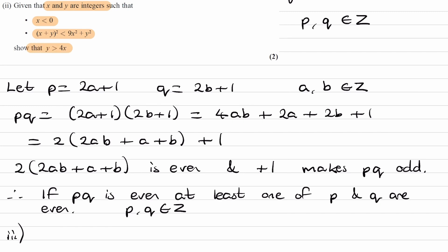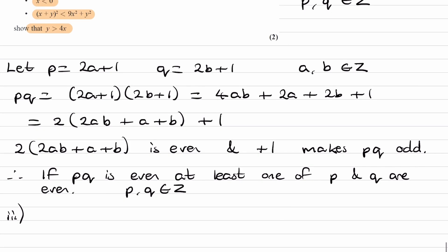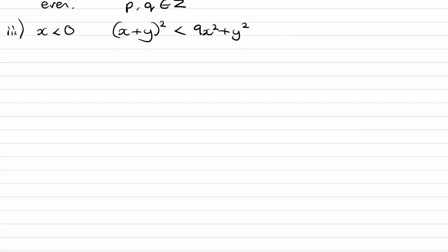Okay, so let's just write that down. So X, we're told, is less than 0, so it's negative in other words. And then X plus Y squared is less than 9X squared plus Y squared. So let's just play around with this statement that we have here. Let's just expand this out.